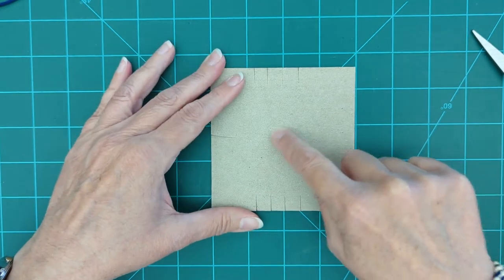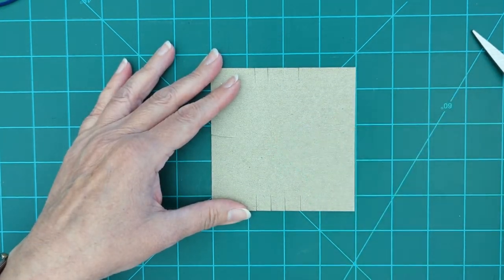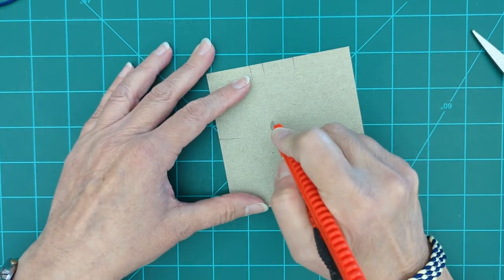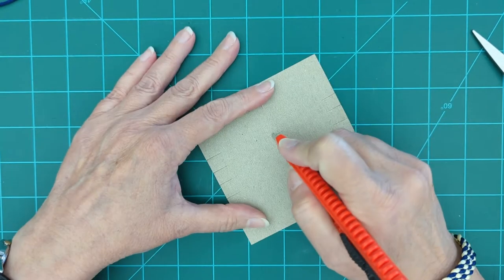Then we're going to do a little cut in the middle. Depending on your scissors, this might be easy to do with scissors. For me, it's going to be easier to do with a sharp razor, so I'm just going to make a little rectangle in the middle.